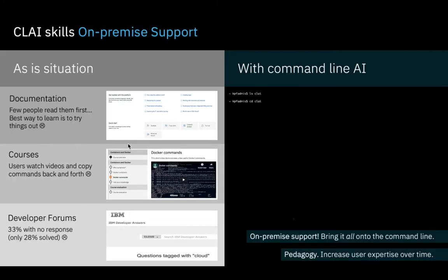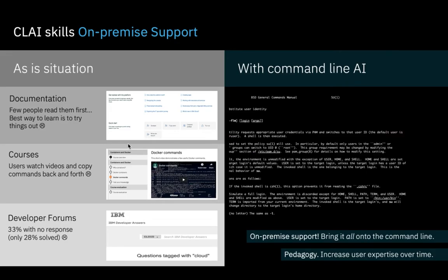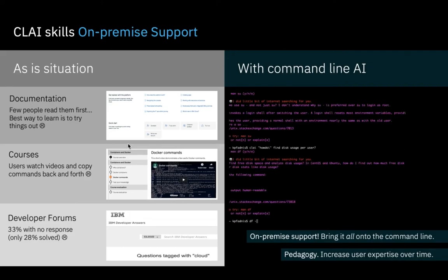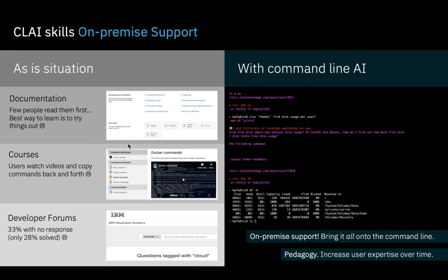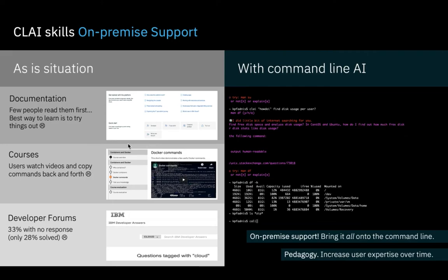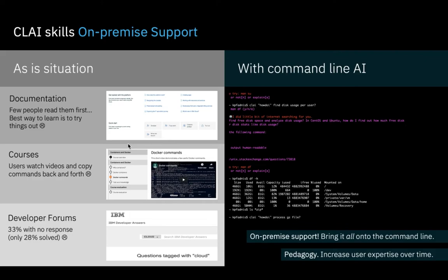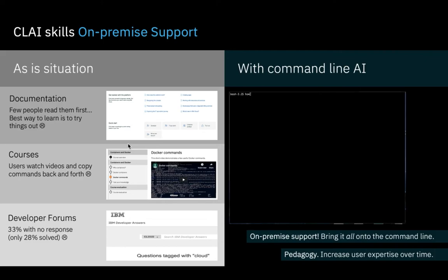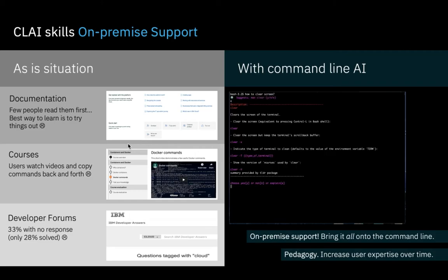Another Clay skill in the troubleshooting category is on-premise support, which brings troubleshooting information directly to the user's terminal by matching their queries or errors with information from the internet. This alleviates the need for the user to leave the context of their terminal when seeking help. This skill draws from data sources including Stack Exchange, Stack Overflow, the MAN pages available on most Linux distributions, and any other documentation available for user troubleshooting. This skill can also be used to increase user expertise over time in a pedagogical sense.